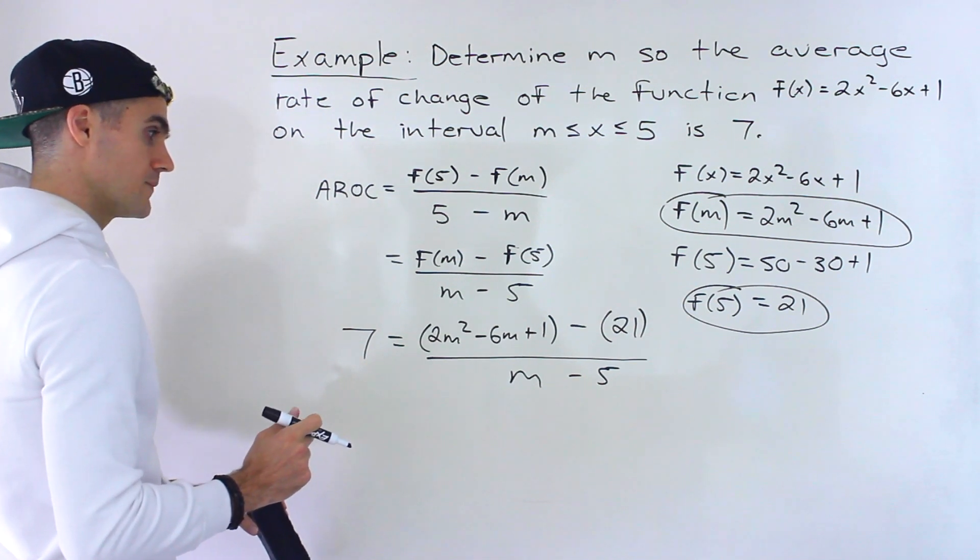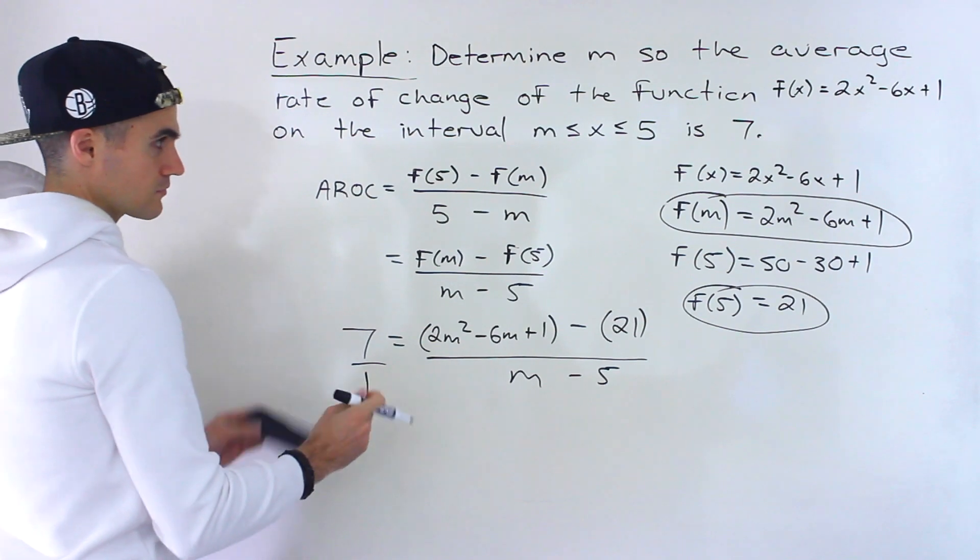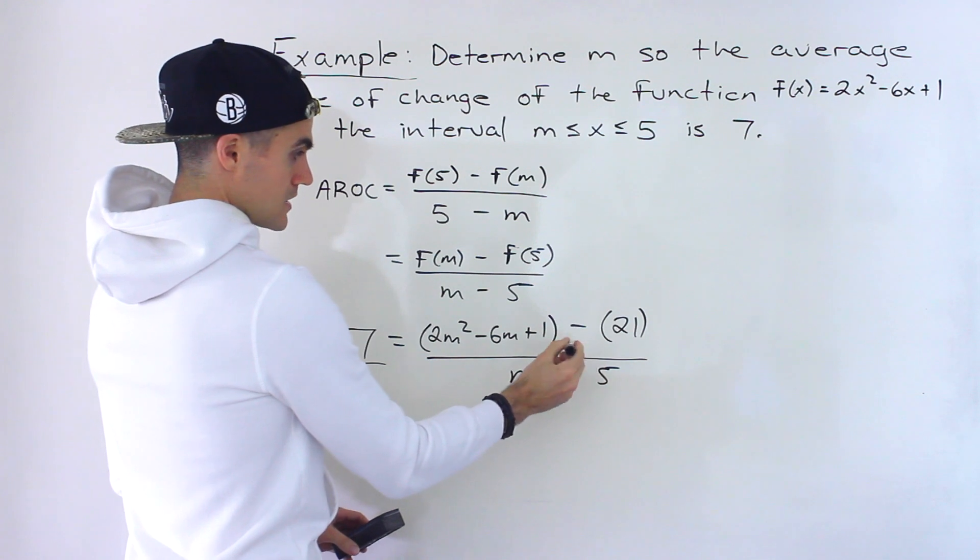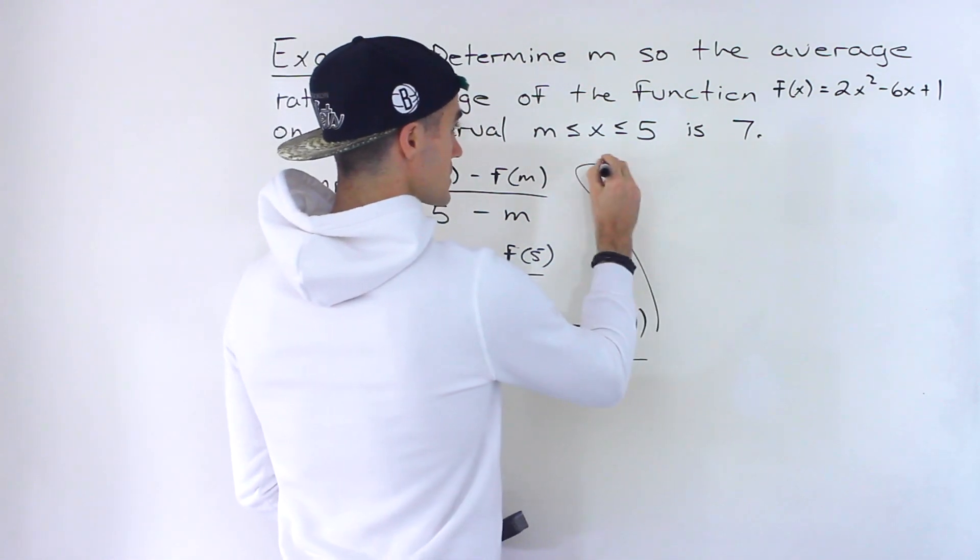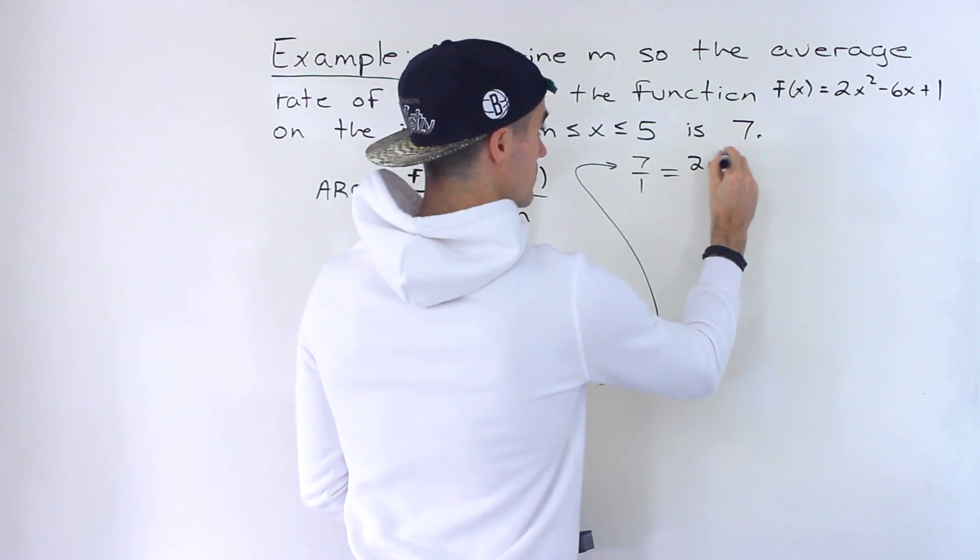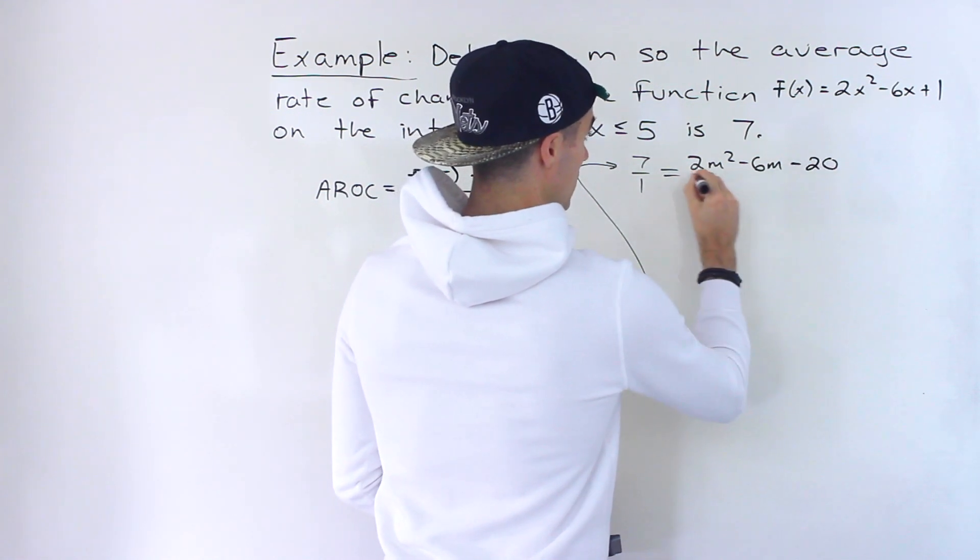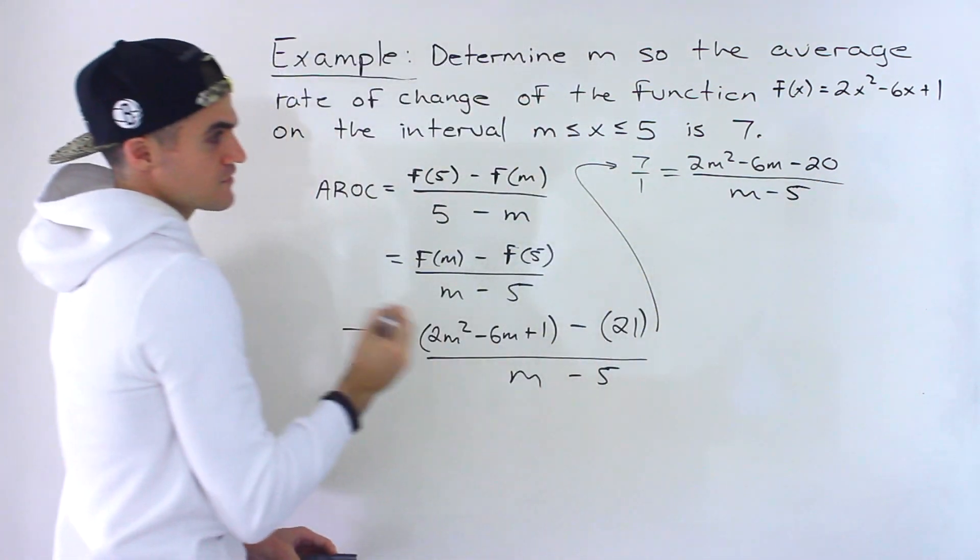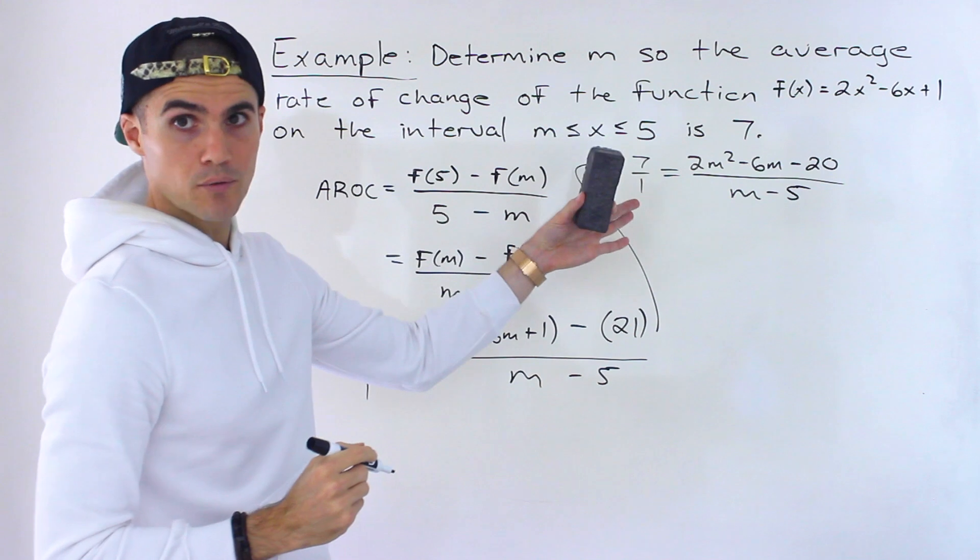So to solve this, what I'm going to do is I'm going to put the 7 over 1. Now also notice how we can simplify the numerator here. So we'll have continuing this here, 7/1 = (2m² - 6m - 20) / (m - 5), like that.